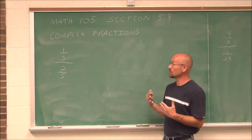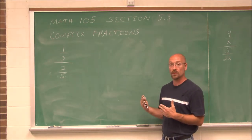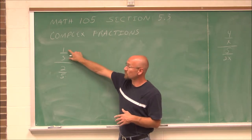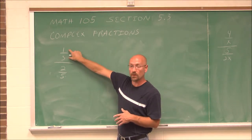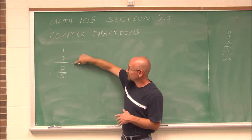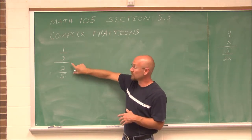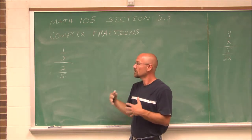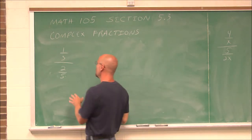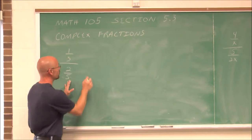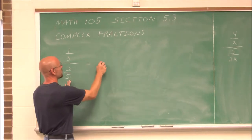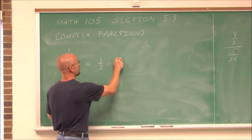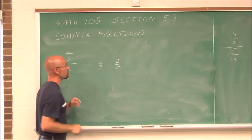It's something you should actually be somewhat familiar with. Because really, all this is saying is this fraction of 1/3 in the numerator is divided by this fraction of 2/5 in the denominator. So to call it a complex fraction, it's just a different way of representing 1/3 divided by 2/5.